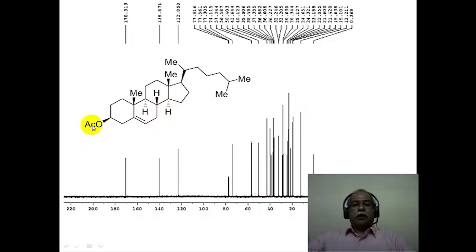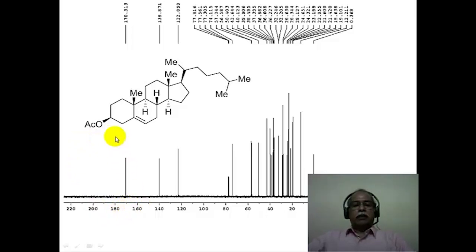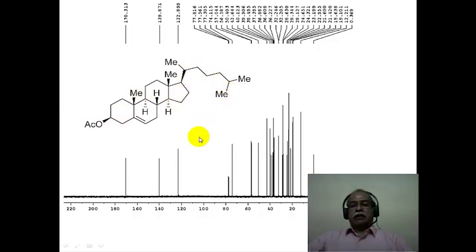Cholesterol acetate is a steroidal molecule with about 29 carbons including the acetyl carbon. Counting the signals in its carbon-13 spectrum reveals approximately 27–29 peaks for this aliphatic compound. The most deshielded carbon is the carbonyl carbon of the acetate group at around 170 ppm, readily identified. Two olefinic carbons appear in the olefinic region, with the more substituted olefinic carbon at higher delta and the less substituted at lower delta. The CDCl₃ three-line pattern is also visible, and the remainder of the signals correspond to the aliphatic steroidal skeleton.